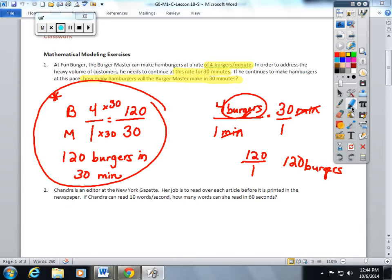Chandra is an editor at the New York Gazette. Her job is to read over each article before it's printed in the newspaper. If Chandra can read 10 words per second, how many words can she read in 60 seconds?